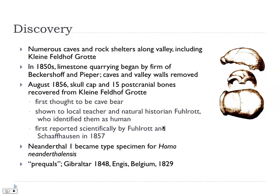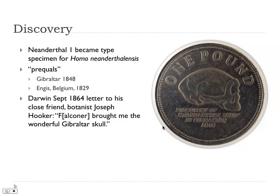As often is the case in science, this was not the first discovery of Neanderthals, although we take the name from this discovery. There were prequels: a skull from Gibraltar in 1848 and one from Belgium in 1829, which we now know are Neanderthals. The Gibraltar skull was actually shown to Darwin at Down House — Darwin actually handled it — and it's now on the one pound coin from Gibraltar, celebrating that discovery.